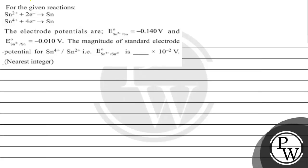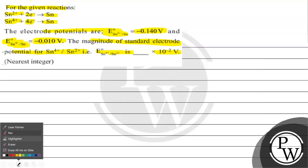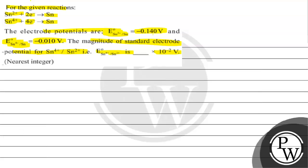Hello, let's read this question. The question says: Sn²⁺ + 2 electrons gives Sn, and Sn⁴⁺ + 4 electrons gives Sn. The electrode potentials are E° of Sn²⁺/Sn = -0.140 V, and E° of Sn⁴⁺/Sn = -0.010 V. We have to find the magnitude of the standard electrode potential for Sn⁴⁺/Sn²⁺, which is a blank times 10⁻² V.